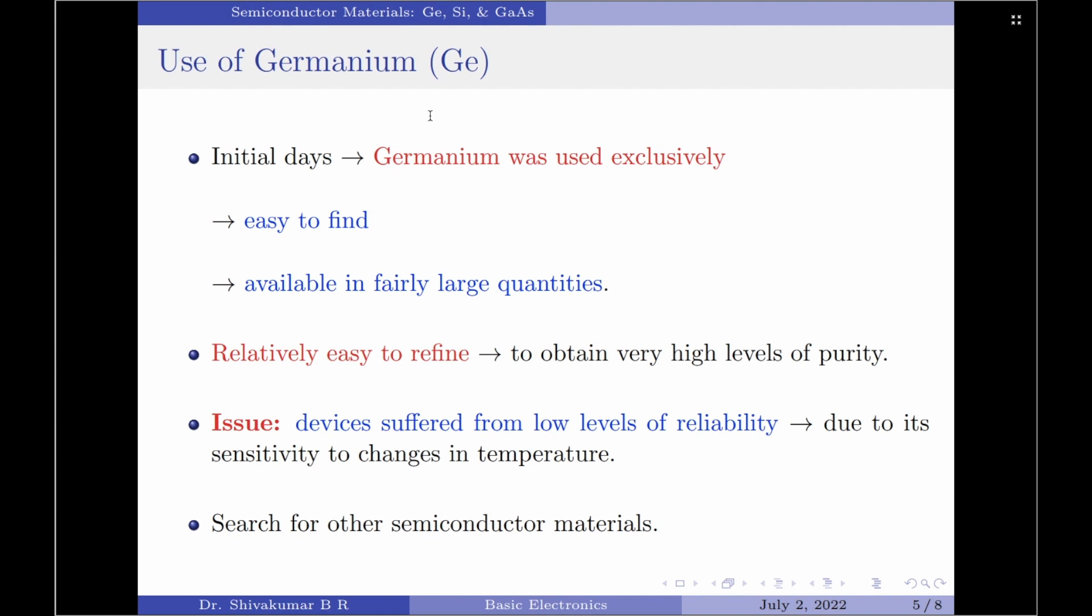I am going to start with germanium first. In the initial days of electronic device construction, that is almost in the 1930s and 1920s, germanium semiconductor was used almost extensively because in those days germanium was quite easy to find.